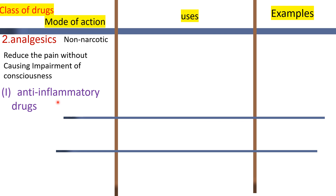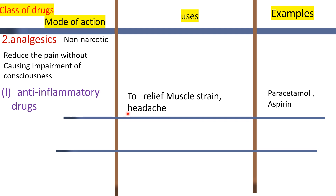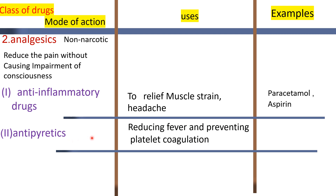Non-narcotic analgesics have three types: anti-inflammatory drugs, drugs that keep muscle strength, and antipyretics. For example, paracetamol and aspirin. These are antipyretics. Aspirin is an antipyretic, reducing fever and preventing platelet coagulation.